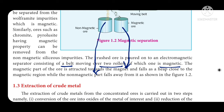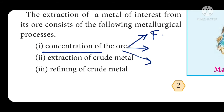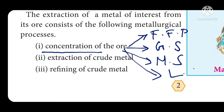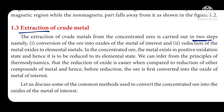With magnetic separation, the concentration of ore topic is complete. Next is the second step in the metallurgical process. Recall that totally three steps are involved. The second step is extraction of crude metals from the concentrated ore, carried out in two steps: one is conversion of ore into oxides of the metal of interest, and second is reduction of metal oxides to the metal.